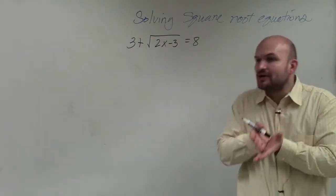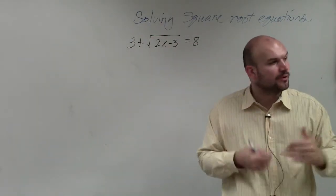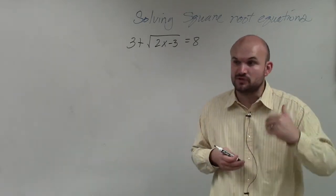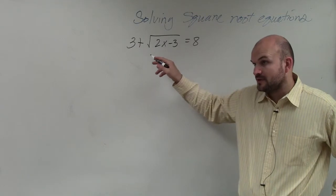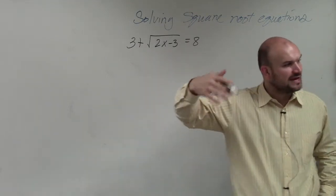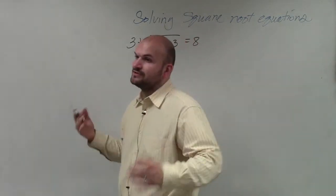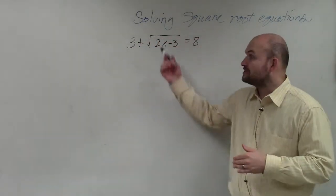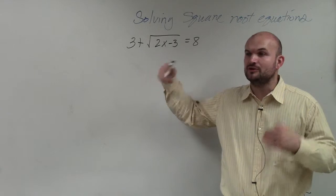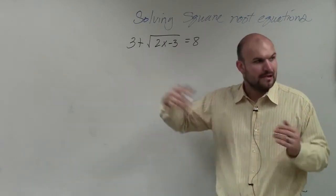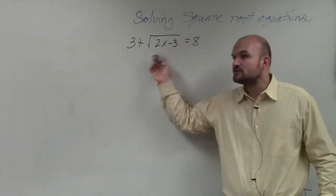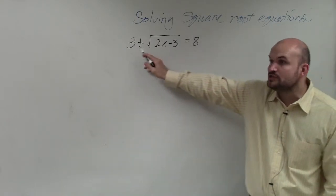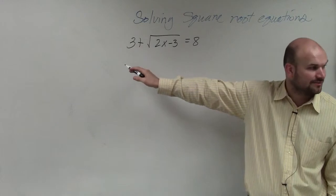So it is imperative, very important that you guys understand this first rule because this is where the majority of mistakes I see with students. When you have a square root, if you remember, the inverse operation of the square root is to square it. But we can only square it when our square root is isolated. That means it's by itself, there is no addition or subtraction going on with the problem.